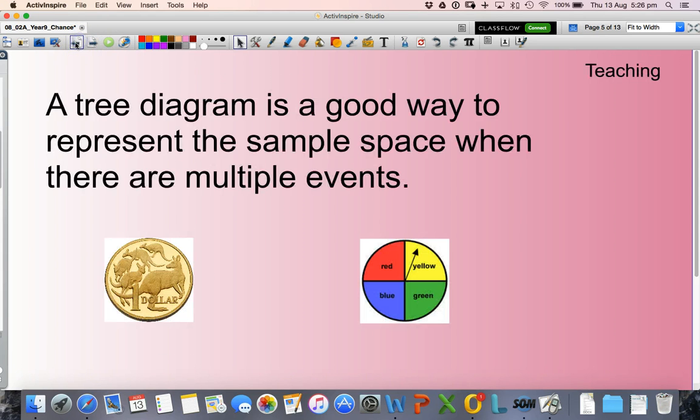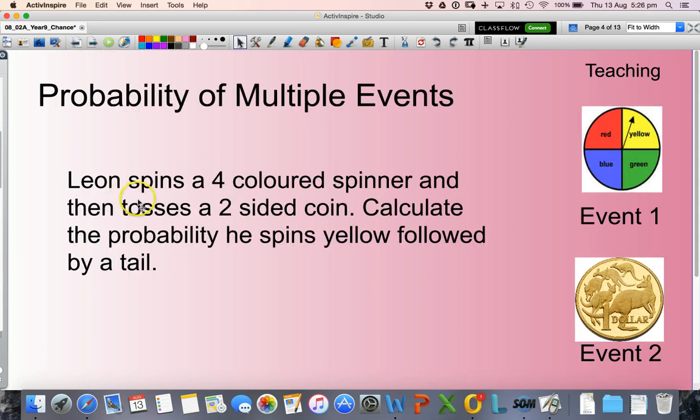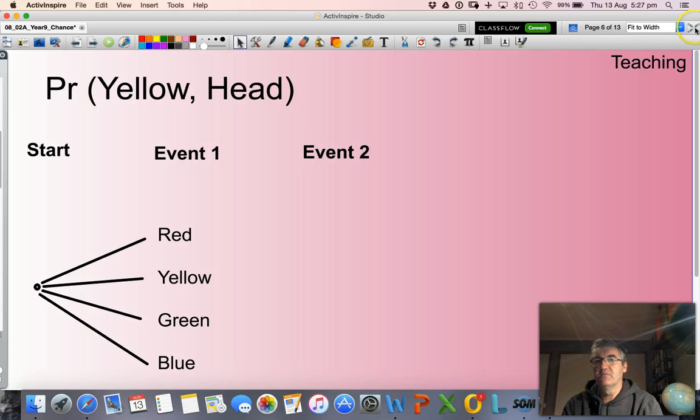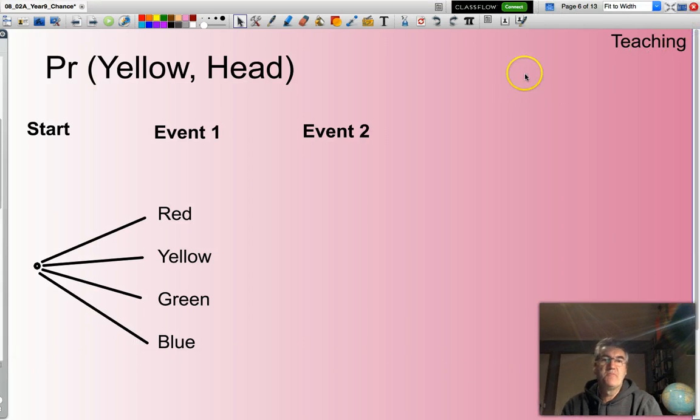So back to the question, just to refresh. Leon is going to spin a four-coloured spinner and then toss a two-sided coin, and we want to know the probability of a yellow spin followed by a tail. So just to make that a little bit bigger so I have more space.